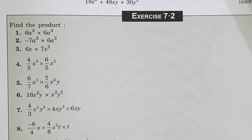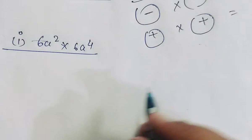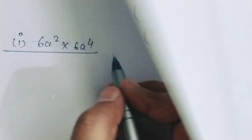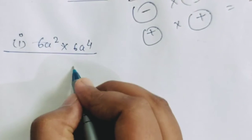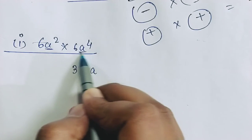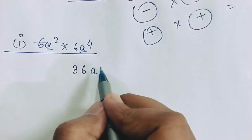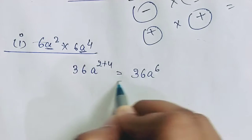Now let's come to Exercise 7.2. The first question: find the product of 6a² multiplied by 6a⁴. Since the numeric values are 6 × 6 = 36, and both have the same base a, we add the powers: 2 + 4 = 6. So the answer is 36a⁶.